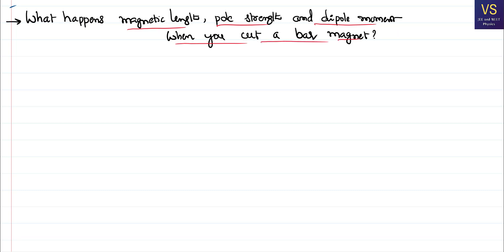We will first quickly remind ourselves of these basic parameters. If you look at a bar magnet, it has a north pole and a south pole. Each pole has identical strength but opposite in nature — that is called pole strength. The distance between these two poles is called the magnetic length.